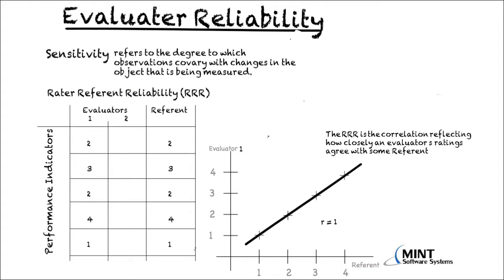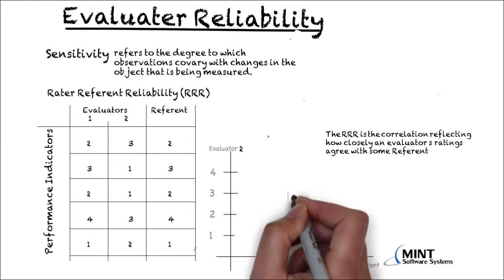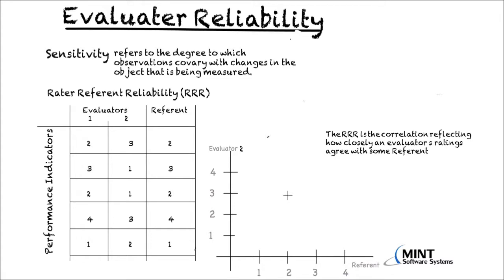Now let's make another example with Evaluator 2. For performance indicator 1, the referent grades 2 and the evaluator grades 3. For indicator 2, the referent grades 3 and the evaluator grades 1. For indicator 3, the referent grades 2 and evaluator grades 1. For indicator 4, the referent scores 4 and evaluator grades 3. For the last indicator, the referent grades 1 and the evaluator grades 2. Drawing the best-fitting straight line, we can see the deviations are much higher. The rater-referent reliability is only 0.22.